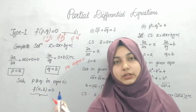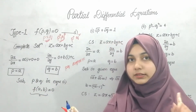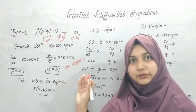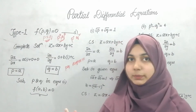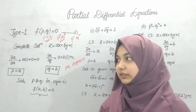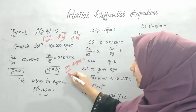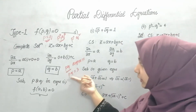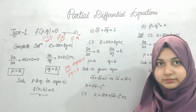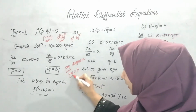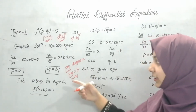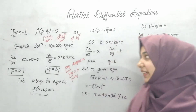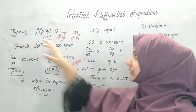To identify a nonlinear PDE, first look at the degree of P and Q. If it is one, it is linear; if more than one, it is nonlinear. For example, if the question is PQ = 3, the degrees are one but there is a product P into Q, so this is also a nonlinear PDE.